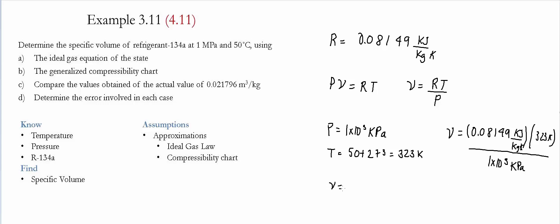We substitute these values: specific volume equals 0.08149 kilojoules per kilogram Kelvin times 323 Kelvin divided by 1 times 10 to the 3 kilopascals. The value we obtain is 0.026325, and the units are kilojoules which is the same as kilonewton times meter. Kilopascal is the same as kilonewton per meter squared. Then we cancel: kilonewton cancels, Kelvin cancels, and we get meter cubed per kilogram, which are units of specific volume.